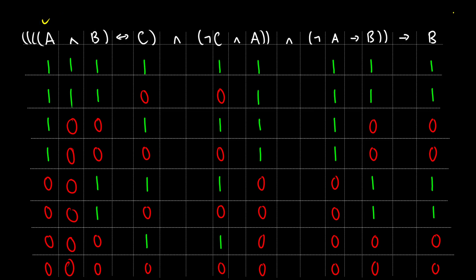Now let's do if and only of C. This gets information from the A and B column and from C, and it's true if the values are the same. First row: one one, that's the same — true. Second row: one zero, that's different — false. Third row: zero one, that's different — false. Fourth row: zero zero, that's the same — true. Fifth row: zero one, different — false. Sixth row: zero zero, same — true. Seventh row: zero one, different — false. Final row: zero zero, same — true. Now we have our column for A and B if and only of C, and our first premise is taken care of.